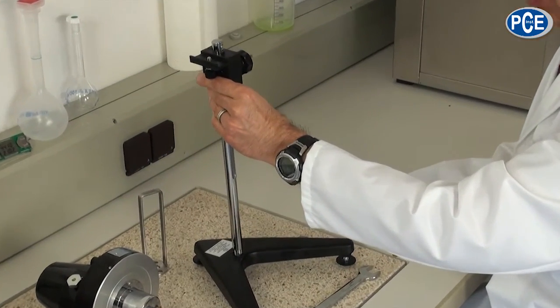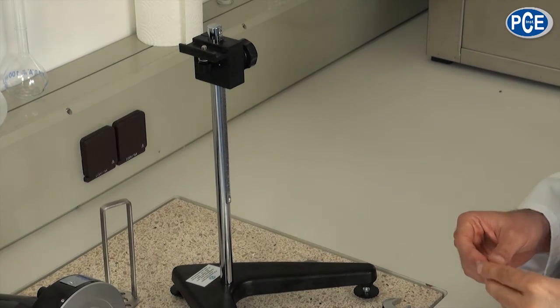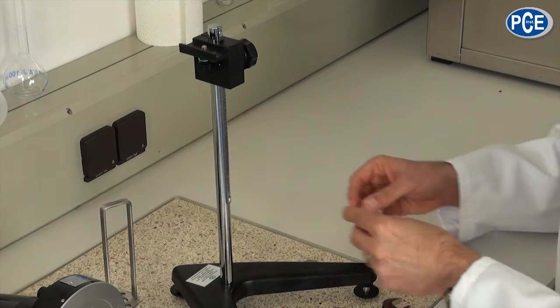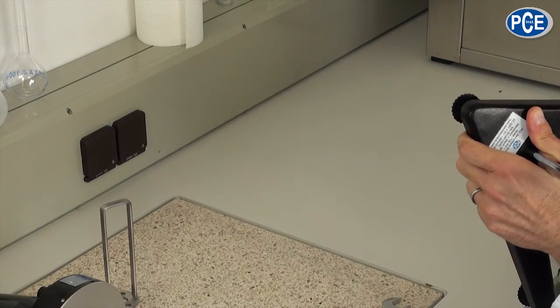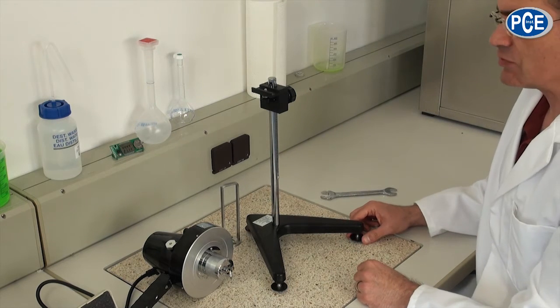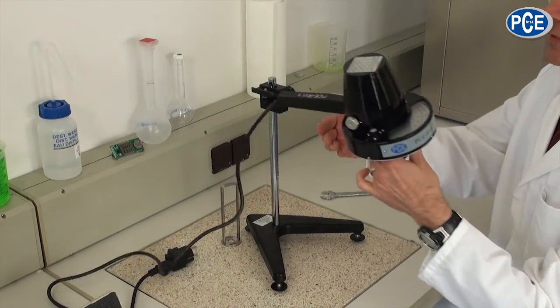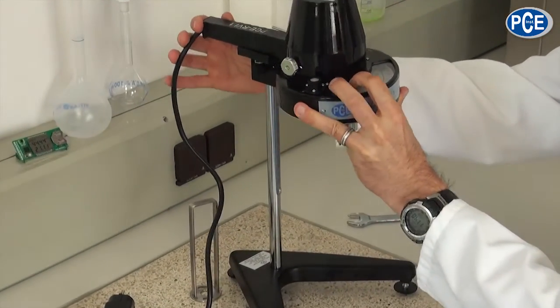I would like to show you now the construction of the viscometer. The supporting rod is put simply into the stand and with the nut and spanner fixed. The rod is fixed and we can now take the viscometer and sit it onto the mount. For this we take the viscometer in hand and fix it with the screw on the stand.